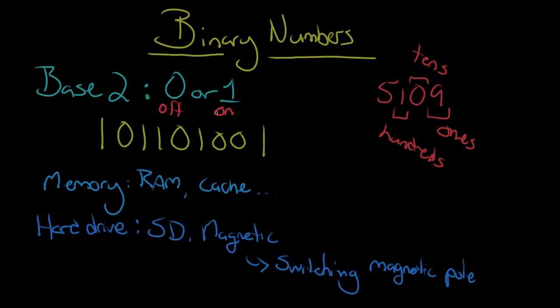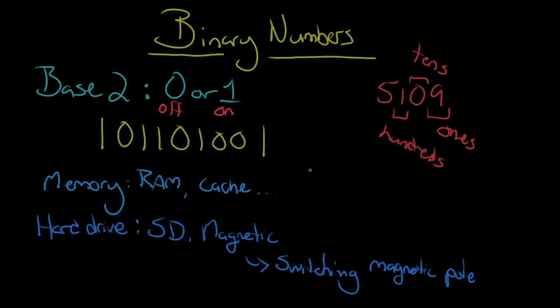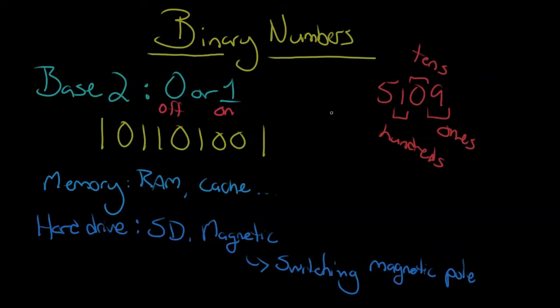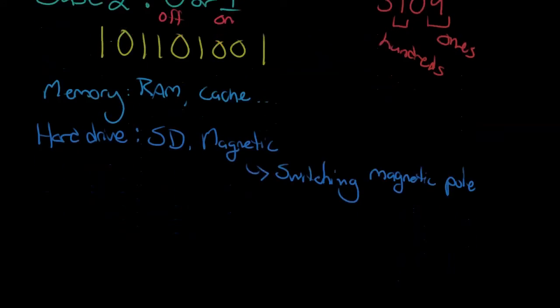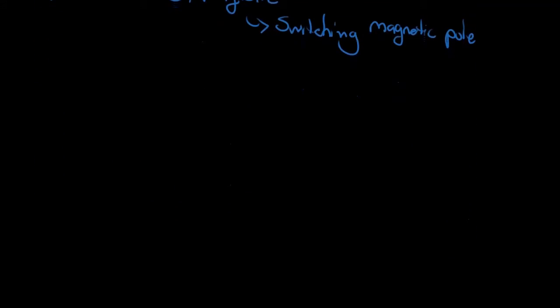Let's look at how we go from binary to what we know as a decimal number or a base 10 number and then back again. Let me give myself a little more space here and make a binary number.